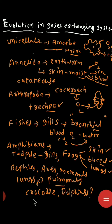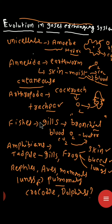When you observe the evolutionary system in the gases exchanging system, you can find different kinds of variations from Annelida to reptiles, aves, and mammals. In Annelida — cutaneous respiration; in Arthropoda — tracheal respiration; in fishes — branchial respiration; in amphibians — different methods; and finally in the highly advanced animals — pulmonary respiration. This is the evolution in the gases exchange system.